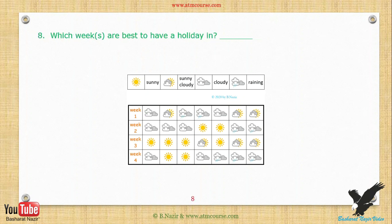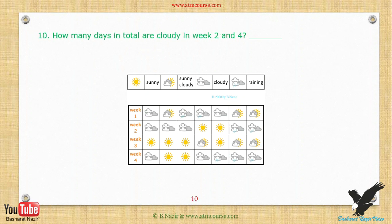Which week is best to have a holiday in? How many days in total are sunny in weeks 2 and 3? How many days in total are cloudy in weeks 2 and 4? Which two weeks had the same number of sunny days?